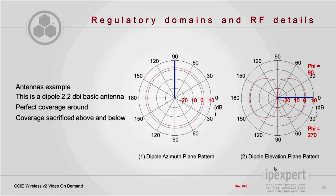These are the two graphs you will always see when access points and antennas are represented. This is the most basic antenna — when you buy an access point, you usually attach what are called basic antennas, which are dipoles with 2.2 dBi of gain. On the left azimuth graph, you can see the direction in which the coverage is going. Think of it as a top-down view of your access point — coverage goes left, right, front, and back, appearing identical in all directions.